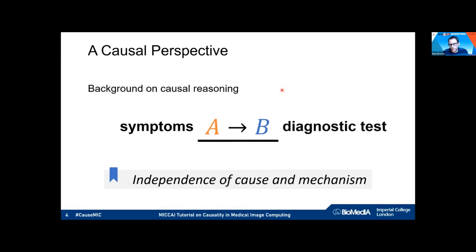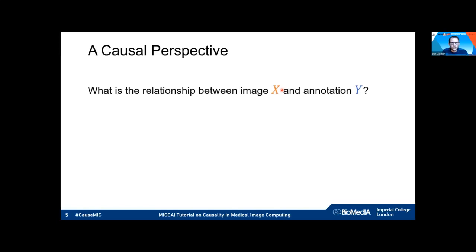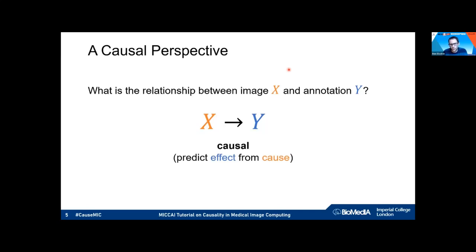In a healthcare setting, this could mean a patient shows up with symptoms, which — following some guidelines — indicate a certain diagnostic test should be done. We got interested in causality and its relationship to medical imaging and machine learning, wanting to understand the relationship between images and annotations. The question is: are the images causing the annotation, or is it the other way around?